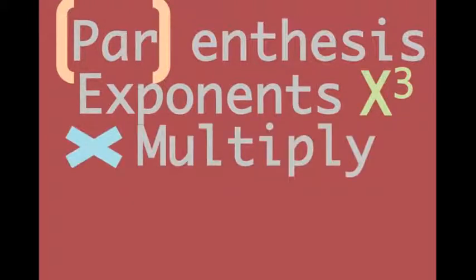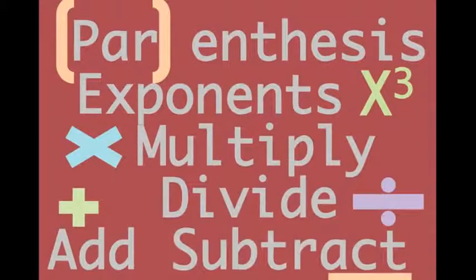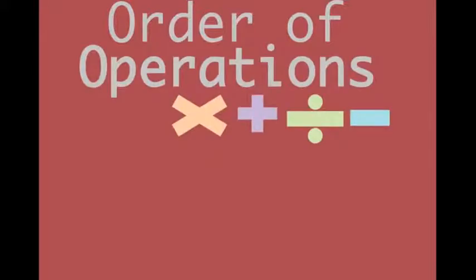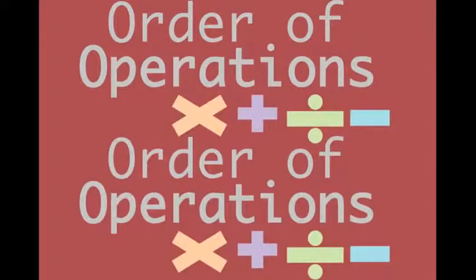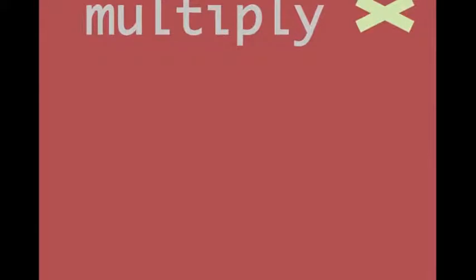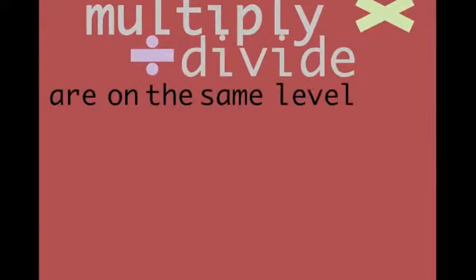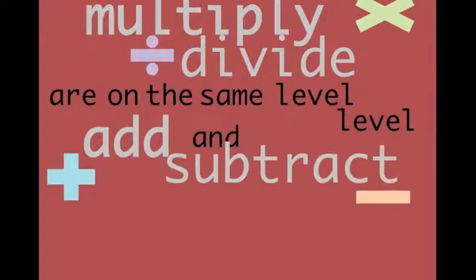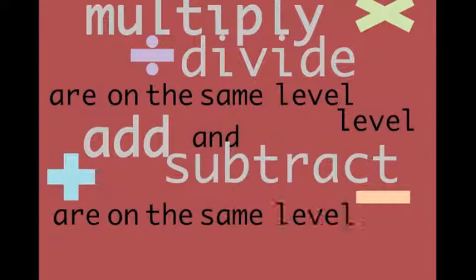Order: multiply, divide, add, subtract. Order of operations. Multiply and divide are on the same level. And add and subtract are on the same level.